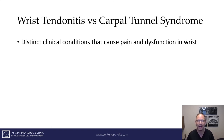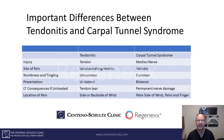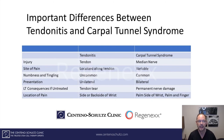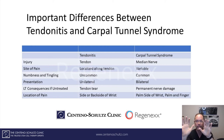Wrist tendinitis versus carpal tunnel syndrome: they're distinct clinical conditions that can cause pain and dysfunction in the wrist, but they are different. With tendinitis, the injury is to a tendon, whereas with carpal tunnel syndrome, the injury is to the median nerve. The site of pain in tendinitis is along the tendon itself, whereas with carpal tunnel it can be on the palm surface and involve the hands and fingers. Numbness and tingling is rarely seen in tendinitis but is very common in carpal tunnel. Tendinitis usually involves just one wrist, whereas carpal tunnel in 50 to 65 percent of cases is bilateral.